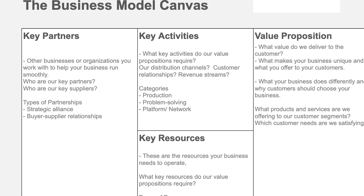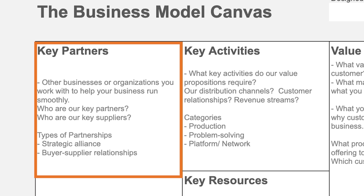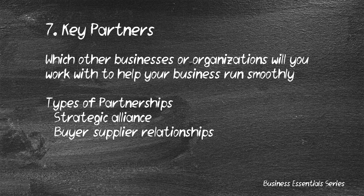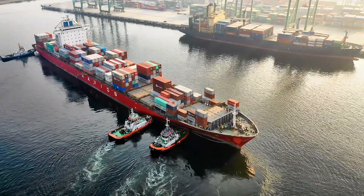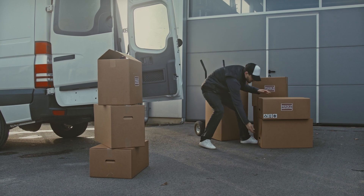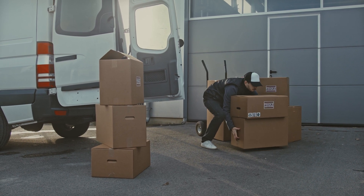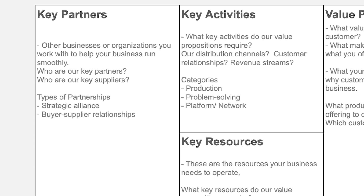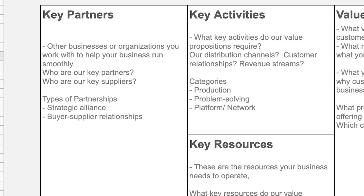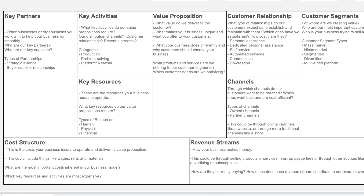The next building block is key partners, which refers to which other businesses or organizations you need to work with in order for your business to run smoothly. If you are selling physical products, one key partner would be your suppliers and another could be your logistics or delivery provider, especially if you are delivering products to customers.